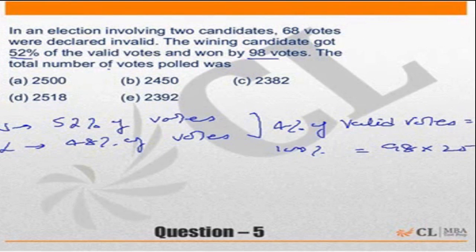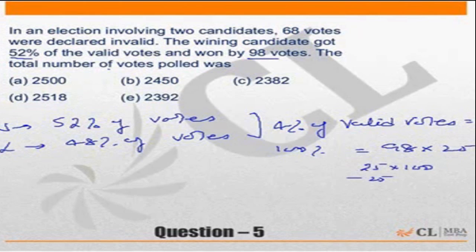98 into 25 — if you have to multiply, it is nothing but 25 into 100 minus 25 into 2, which gives us 2450.